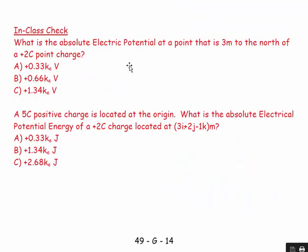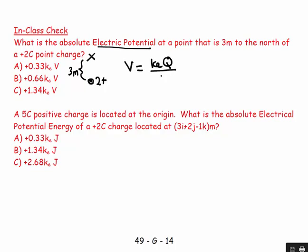Let's try a couple of examples. What is the absolute electric potential at a point three meters north of a two-coulomb positive charge? The direction doesn't matter at all. So V equals kQ/r, which is ke times (+2) over 3, giving approximately +0.667 ke volts. It's positive because it's near a positive charge.